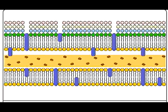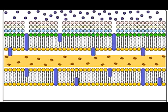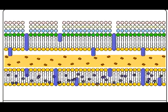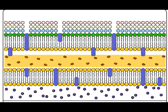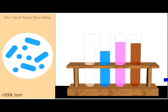In gram-negative bacteria, you'll notice that the peptidoglycan layer is much thinner and there is also an outer membrane. After the crystal violet sits for a minute, the cells are stained a bluish or purple color. We then give a quick rinse of water and move on to the next step.